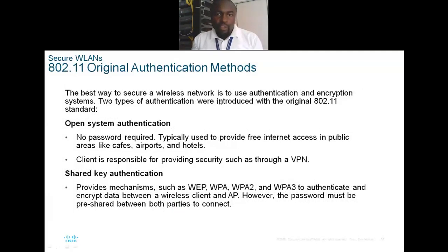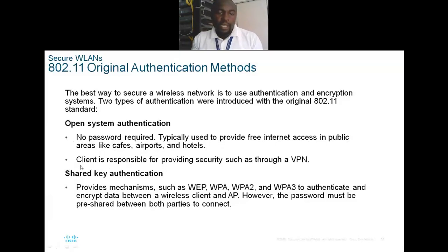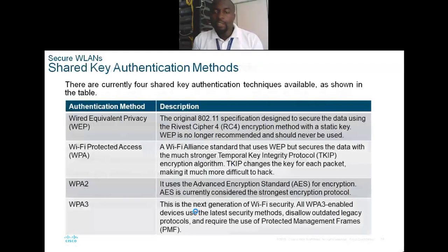The best way to secure a wireless network is to use authentication and encryption systems. Two types are introduced: open system authentication, where no password is required and typically used for free internet in public areas like airports; and shared key authentication, which provides mechanisms such as WEP, WPA, WPA2, and WPA3 to authenticate and encrypt data between wireless access points and clients. With shared key, the password must be shared between both parties to connect.